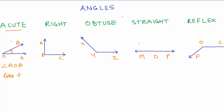The key characteristic of an acute angle is that it is less than 90 degrees. Now let us look at the right angle. As the name suggests, this angle measures 90 degrees. Angle ABC equals 90 degrees, so any angle that measures 90 degrees is known as a right angle.